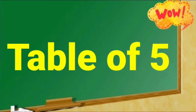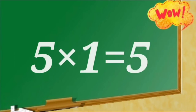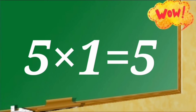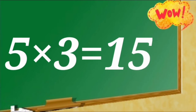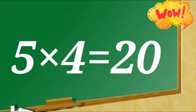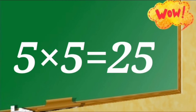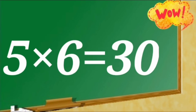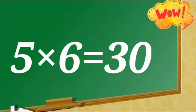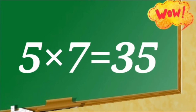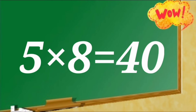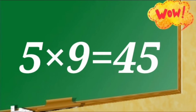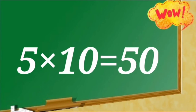Table of 5. 5 ones are 5, 5 twos are 10, 5 threes are 15, 5 fours are 20, 5 fives are 25, 5 sixes are 30, 5 sevens are 35, 5 eights are 40, 5 nines are 45, 5 tens are 50.